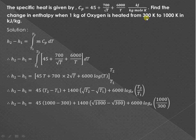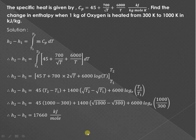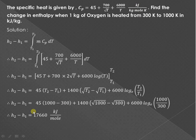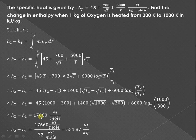Now substitute the values: T1 = 300 Kelvin and T2 = 1000 Kelvin. The value obtained will be in kilojoule per mole because the mass is 1 kg and temperature is in Kelvin. To convert to kilojoule per kg, we divide by the molecular weight of oxygen, which is 32 kg/mol. The mole cancels out, giving the final answer as 551.87 kJ/kg.